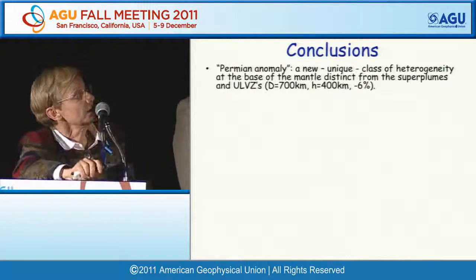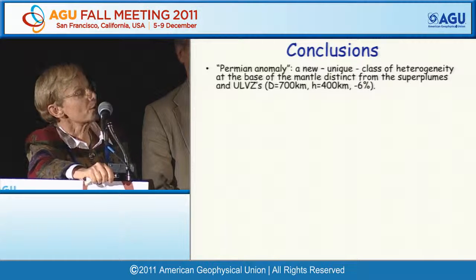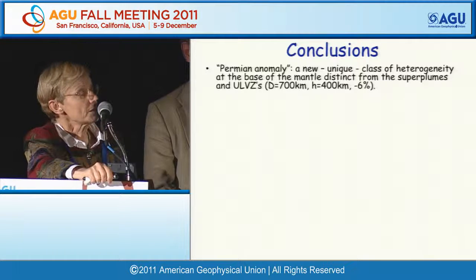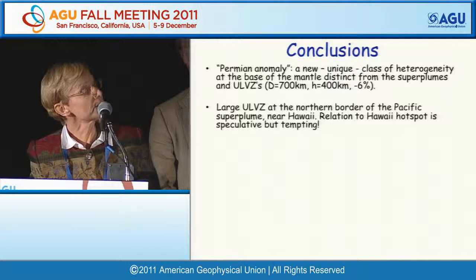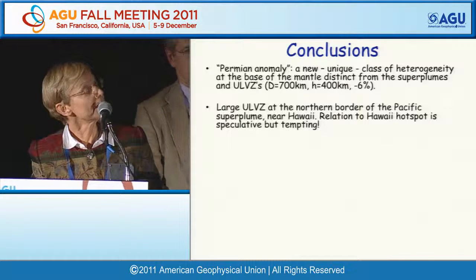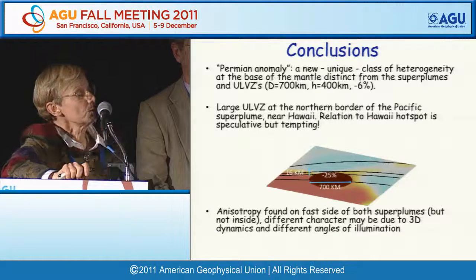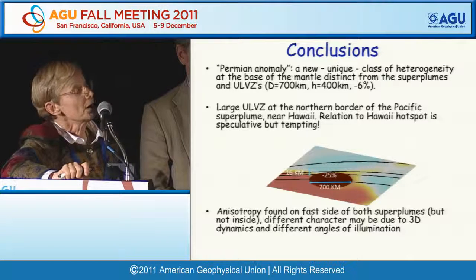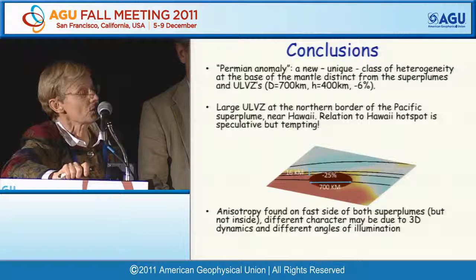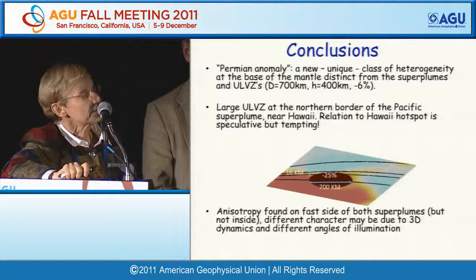In conclusions, we have shown evidence for a new and unique class of heterogeneity at the base of the mantle: the Permian anomaly, distinct from the superplumes and different from classical ULVZs. There is a large ULVZ at the northern border of the Pacific superplume near Hawaii—its relation to Hawaii's hotspot is speculative but tempting. Anisotropy is found on the fast side of both superplumes but not inside, with different character in the two cases, possibly due to complex 3D dynamics and different illumination angles. All of this is input for dynamic and mineral physics interpretations of lowermost mantle structure.